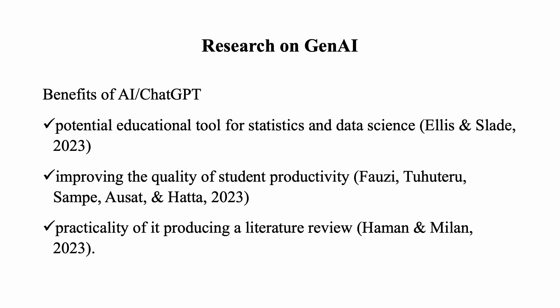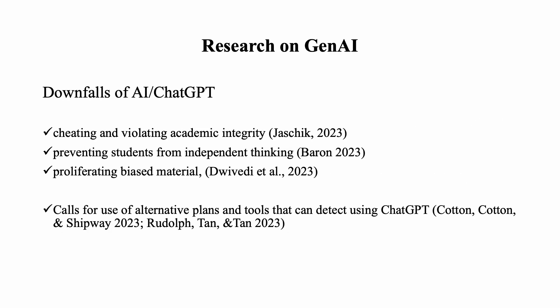It is true that research shows that ChatGPT, or AI in general, has many benefits, such as the potential as an educational tool for statistics and data sciences, improving the quality of student productivity, and producing a literature review. Yet it also shows there are downfalls, such as cheating and violating academic integrity, preventing students from independent thinking, and proliferating biased material. Due to such issues, many are calling for alternative plans and tools that can detect the use of ChatGPT.